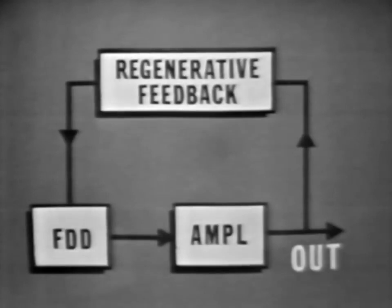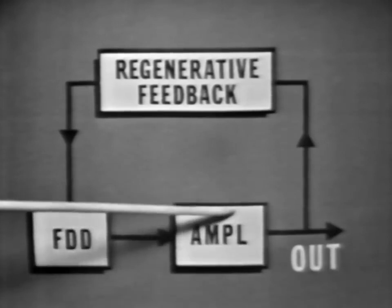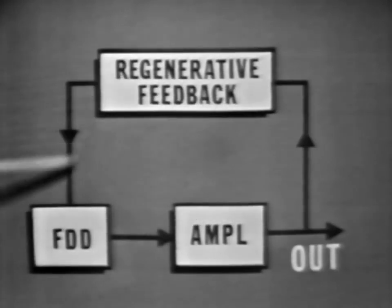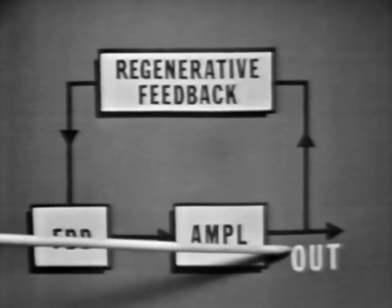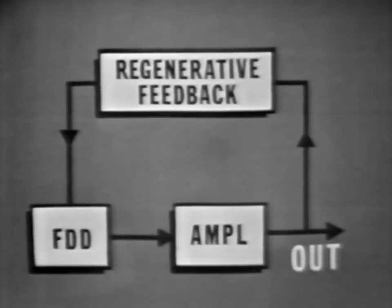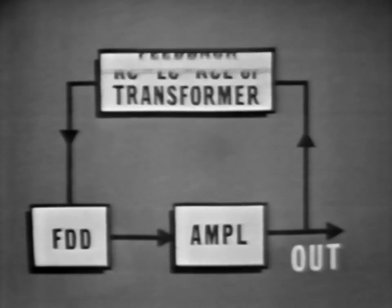Now, the way this is usually accomplished is through an amplifier. The frequency-determining device provides an input to the amplifier. The amplifier must provide enough gain so that part of the output can be fed back to the input LC circuit to sustain oscillations and, of course, provide enough signal for an output. Now, the energy must be fed back in-phase or regenerative. Now, because many amplifiers shift the phase of the signal by 180 degrees, there may be phase-shifting networks required in the feedback path.